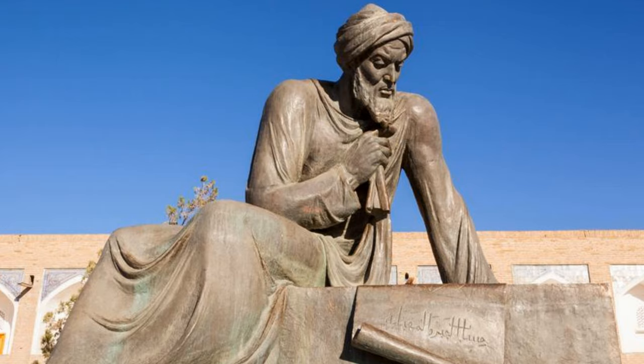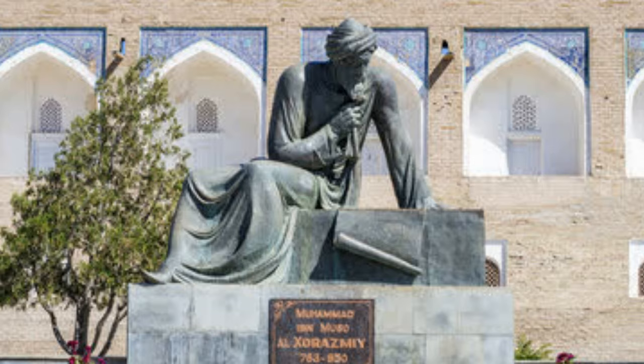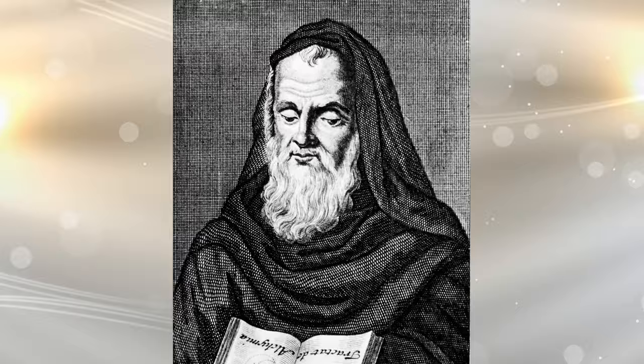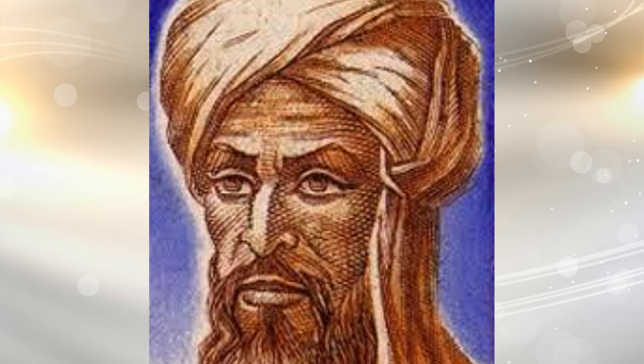Al-Khawarizmi died in about 850 AD having done works that would end up shaping the future of the world. He influenced medieval mathematicians Fibonacci and Roger Bacon through his crafting of algebra. He has essentially influenced every mathematician since.